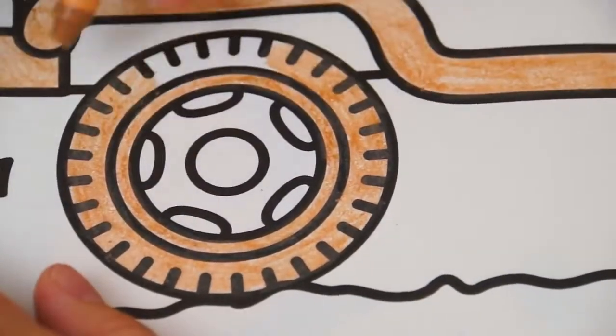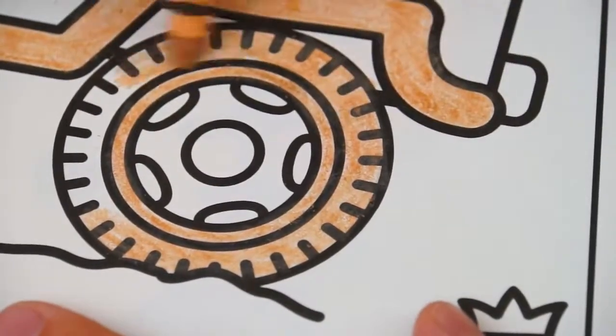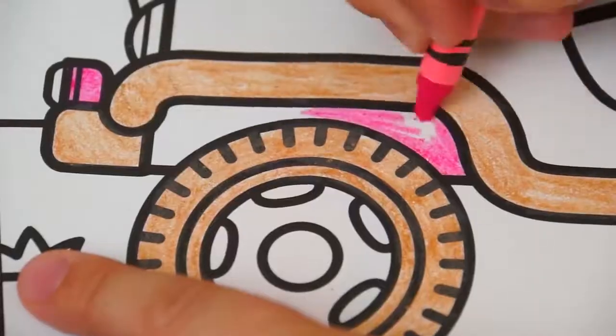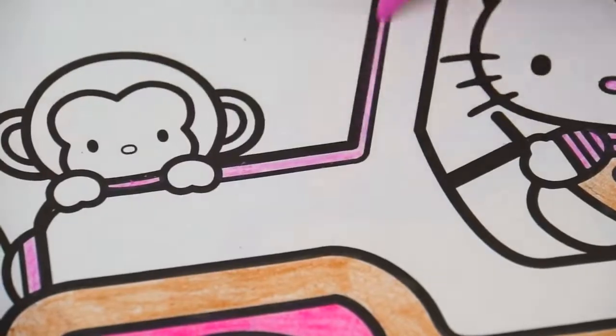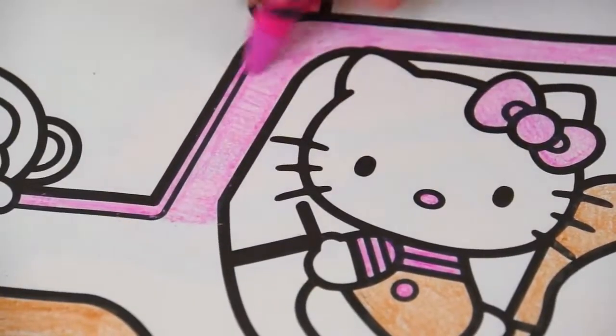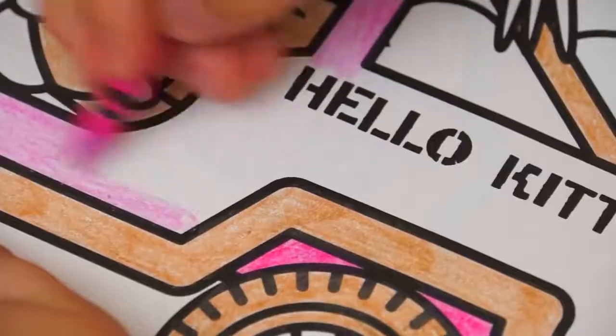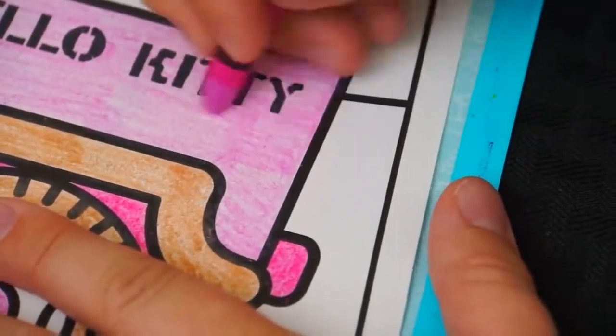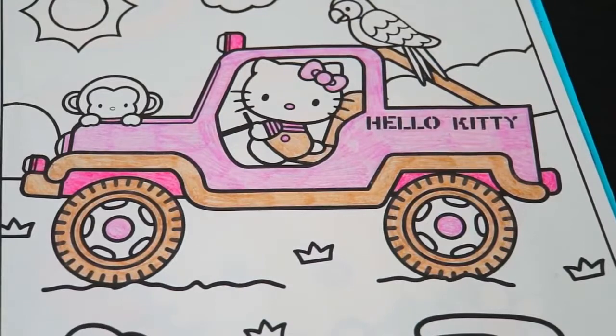And let's do the rest of the truck tan. Let's make it look nice. Okay, I'm all finished coloring in Hello Kitty and her car. This kitty is cruising!